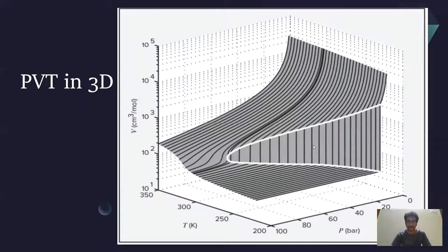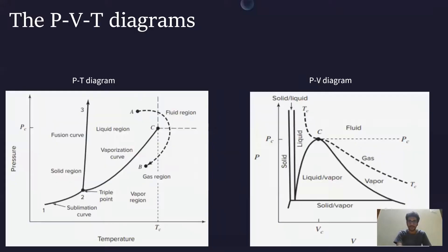This is the PVT diagram in 3D — the three axes being temperature, volume, and pressure. For our convenience, we either study the PT behavior at a constant volume, or the PV pressure-volume behavior at a constant temperature. The dotted curve is an isotherm plotted at a constant temperature, and the point C is known as the critical point.